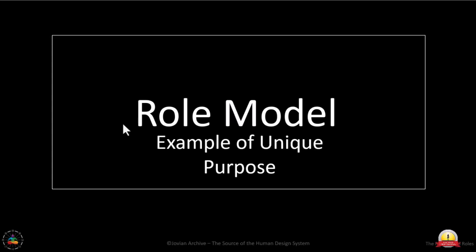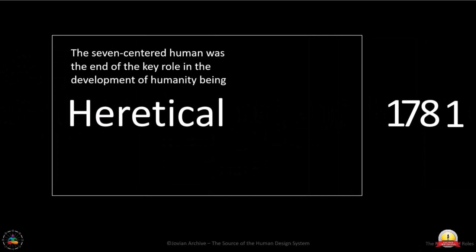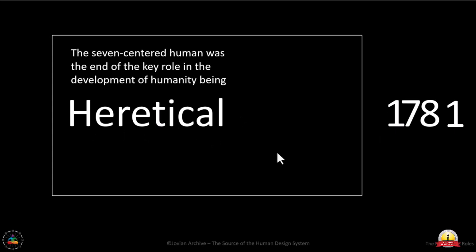If we go back to the seven-centered process, that was a very different life. The seven-centered human was the end of the key role in the development of humanity being heretical. That was the end — 1781 — of heretics being in power. Now, as we move into this shift, it's about the six. It's time for the sixes to rise.